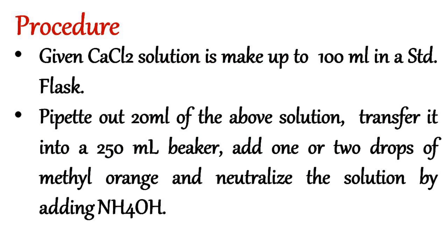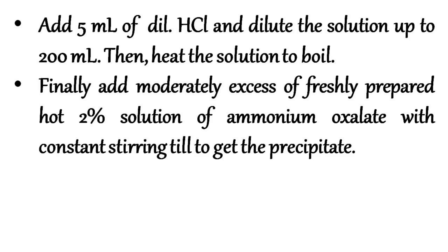Let us discuss the procedure. The given calcium chloride solution is made up to 100 ml in a standard measuring flask. Pipette out 20 ml of the given solution and transfer it into a 250 ml beaker. Add 1 or 2 drops of methyl orange and neutralize the solution by adding ammonium hydroxide carefully.